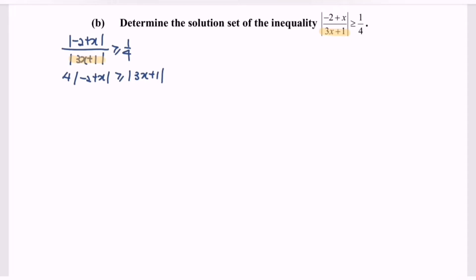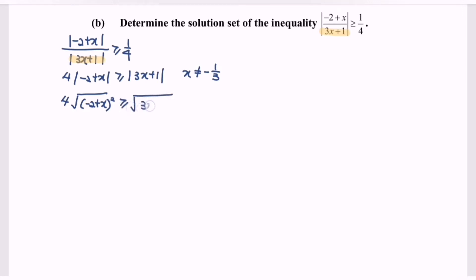Note that x cannot be equal to negative 1 over 3, because it is a denominator and it is not allowed to become 0. Next, referring to the situation, the definition for the absolute value gives us: square root of (-2 + x) squared greater than or equal to square root of (3x + 1) squared.